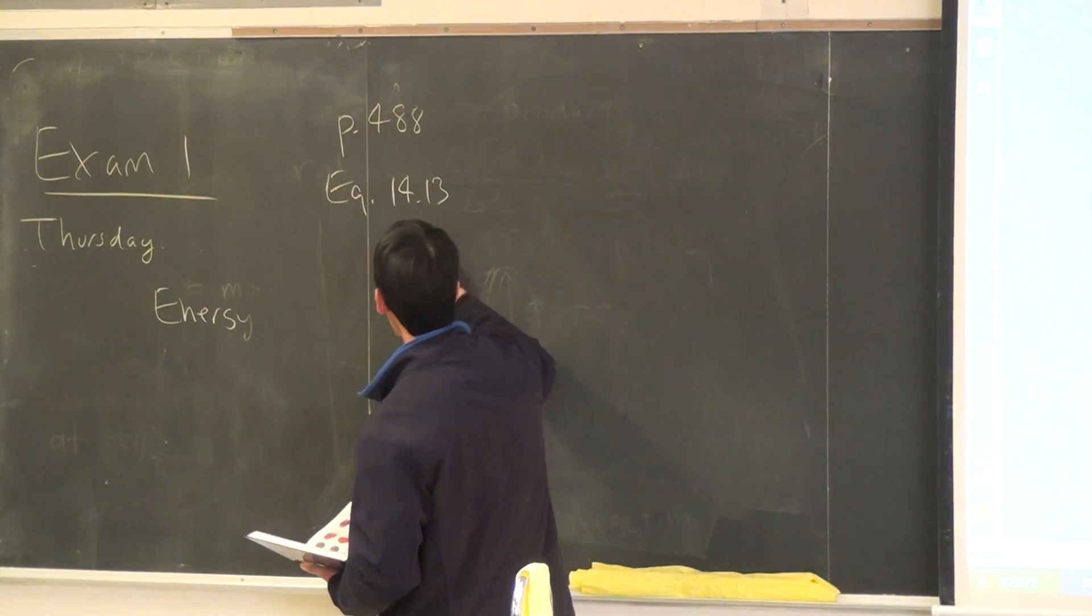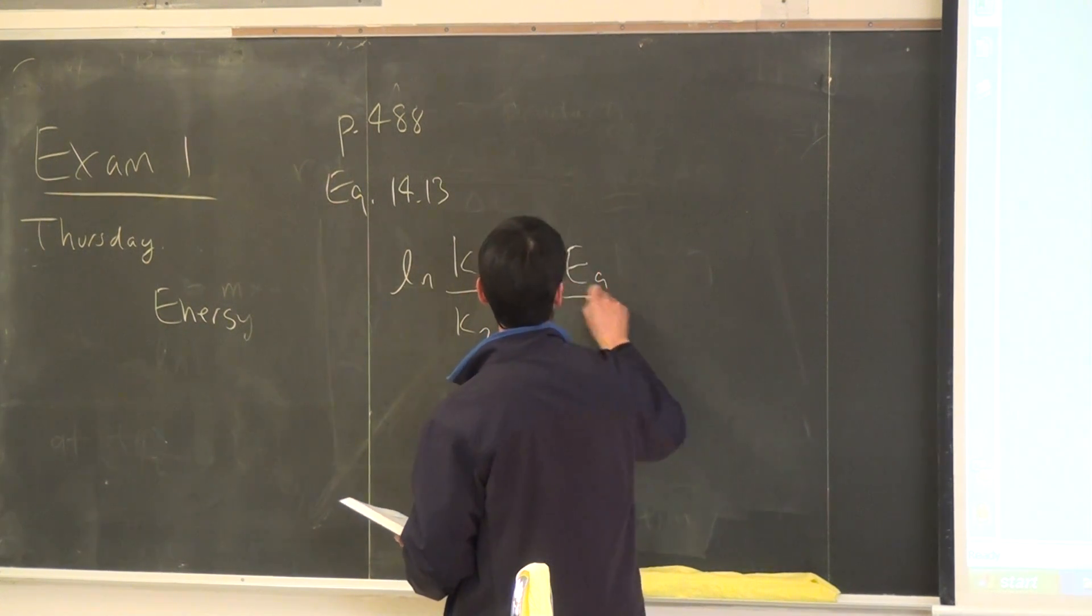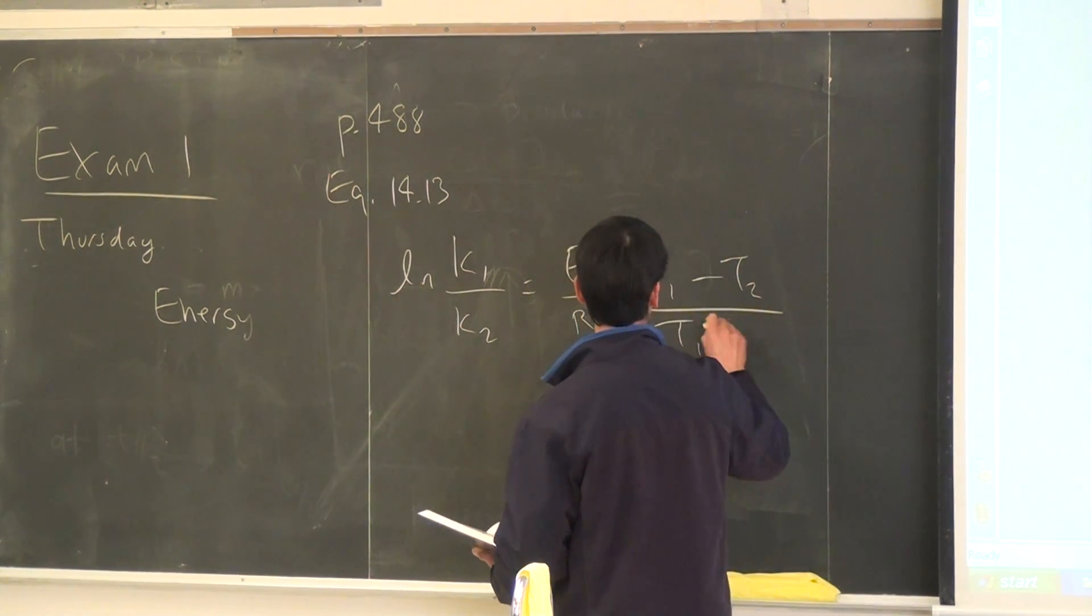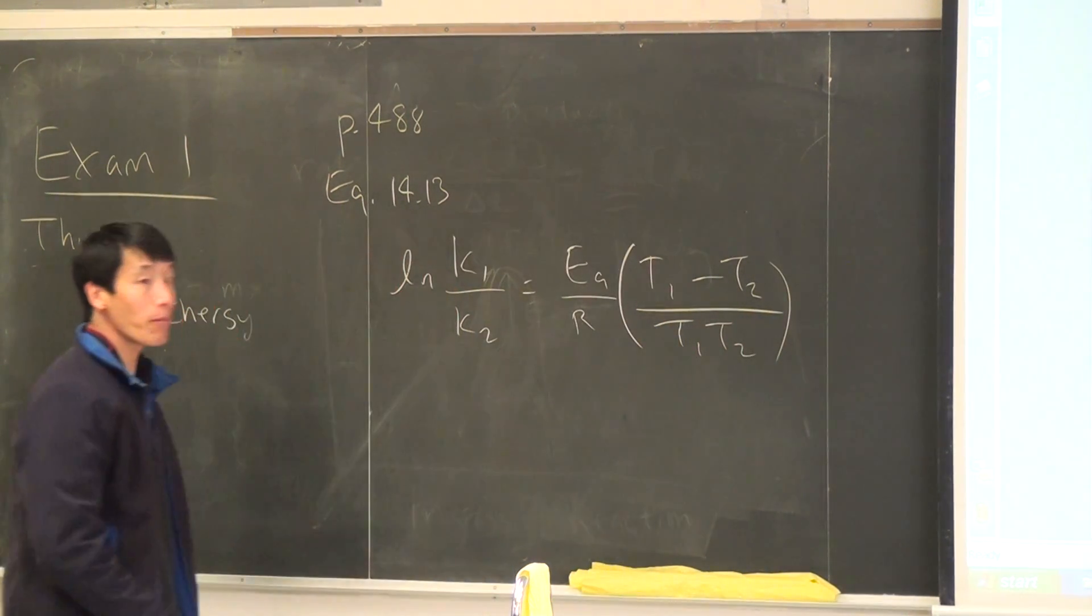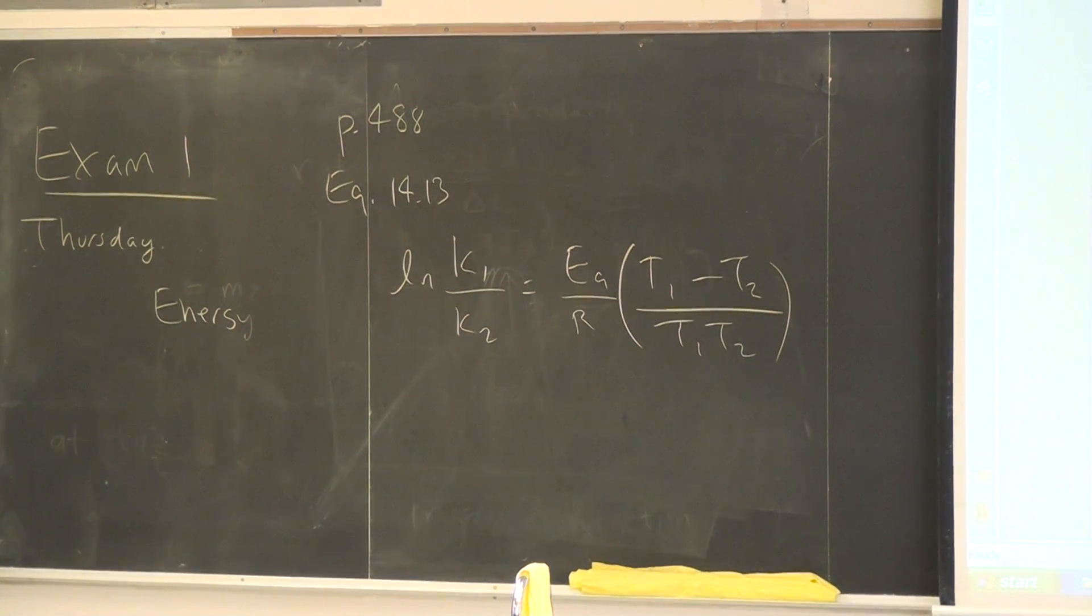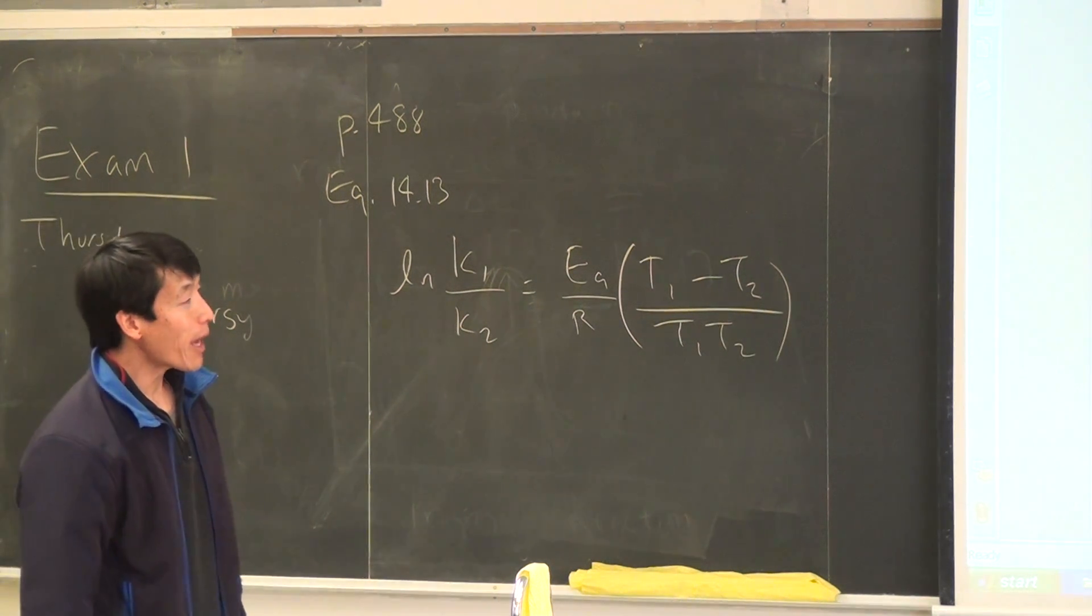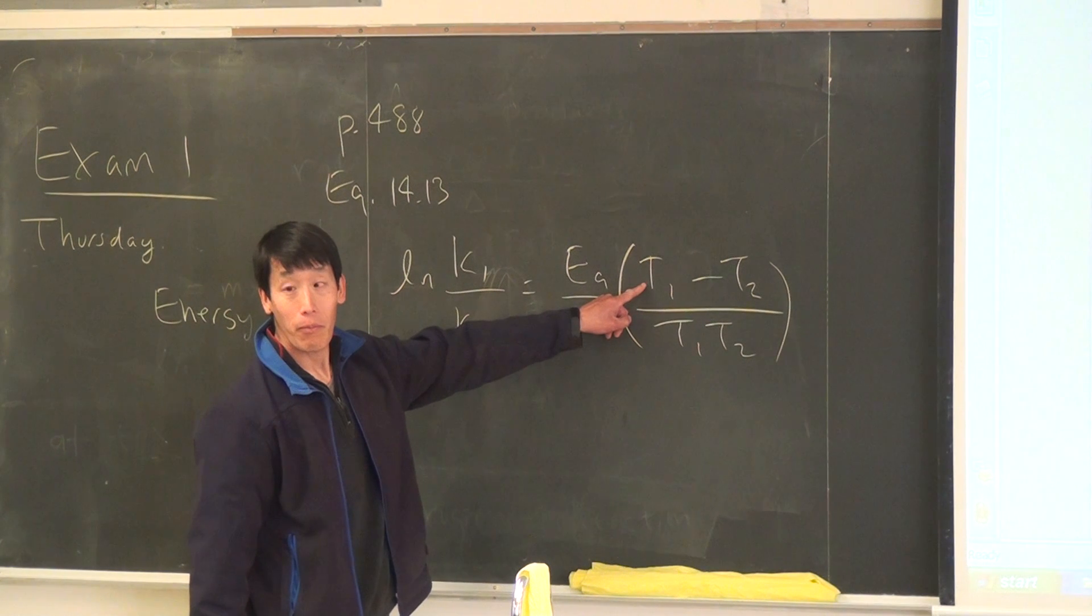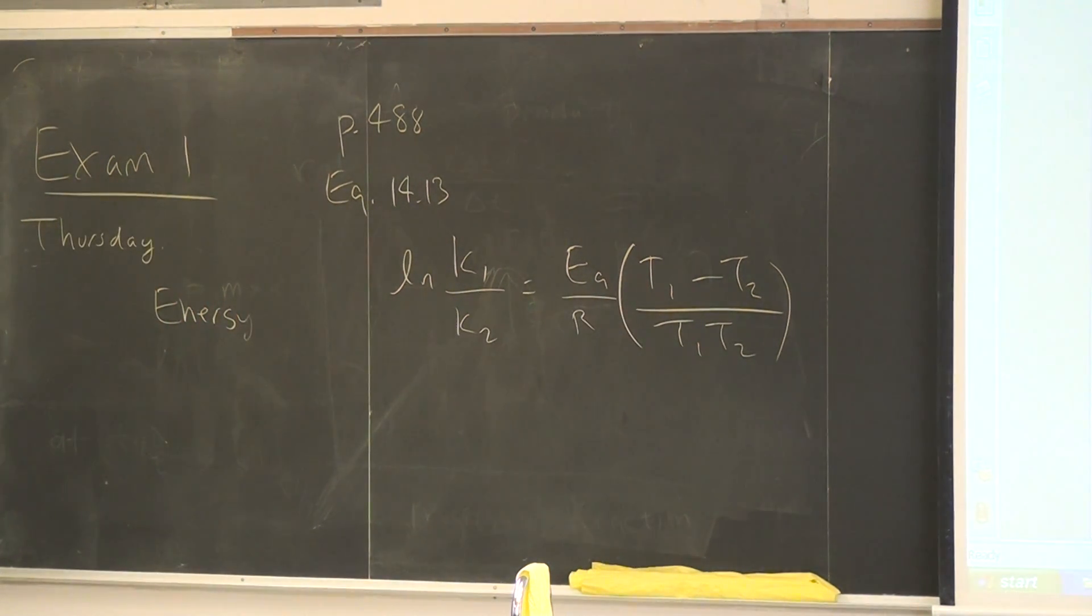So this shows that the natural log of K1 over K2 is equal to EA over R times T1 minus T2 over T1 times T2. So we're given the rate constant K at a certain temperature. So we can know what K1 and T1 are. We want to find the half-life at 37 degrees. So, in this equation, that would represent T2.